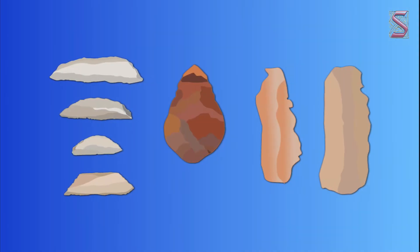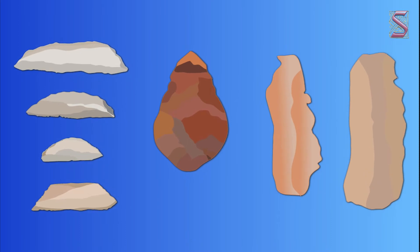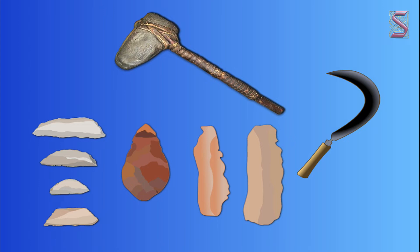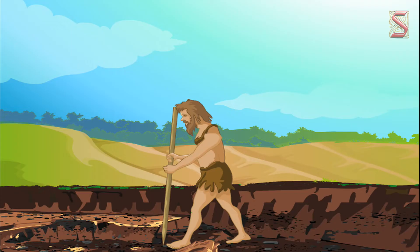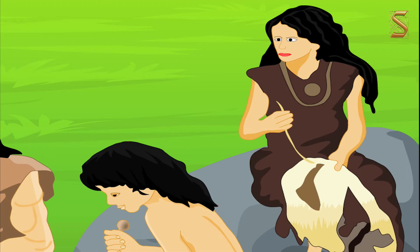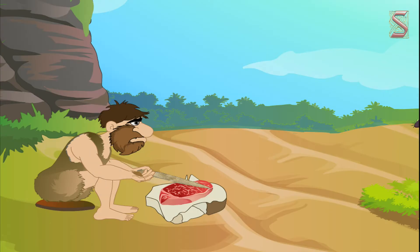Thousands of years later, people began to make small tools from the stones. Here are some images that will help you to understand how the tools were made. Small pieces made from hard stones that were used by these people are called microliths. These pieces were fixed to wooden or bone handles that served as sickles, knives, etc. In addition, they were used to dig the soil, cut the barks of the trees, stitch clothes, remove the skin of animals and use them for covering their bodies, and to cut meat and so on.